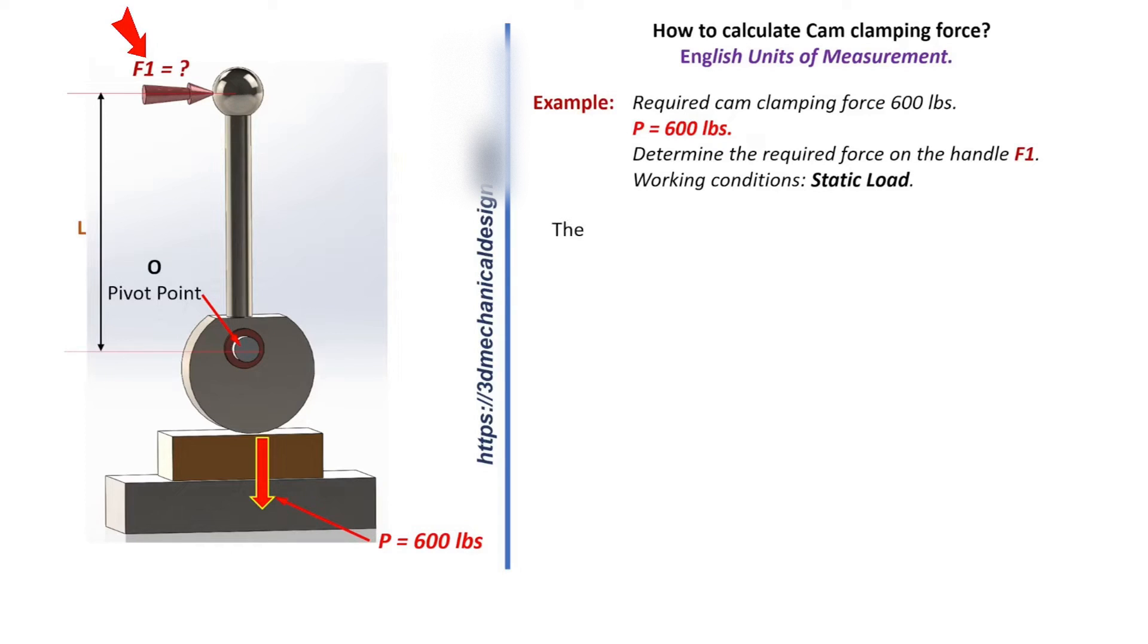The clamp is designed for the following values: O - Pivot Point, L - Length of handle from pivot point O = 6 inches.